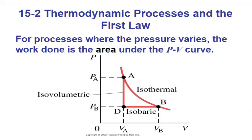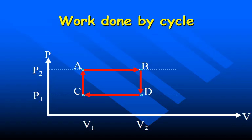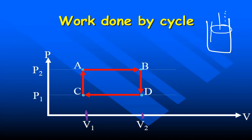For processes where pressure varies, we can still find the work done (area under the curve) and sometimes approximate — for instance using a triangle — before calculus is needed for exact values. Consider a gas going from A to B: volume increases (expansion), then B to D: pressure drops but volume stays fixed, then D to C: volume decreases with constant pressure.